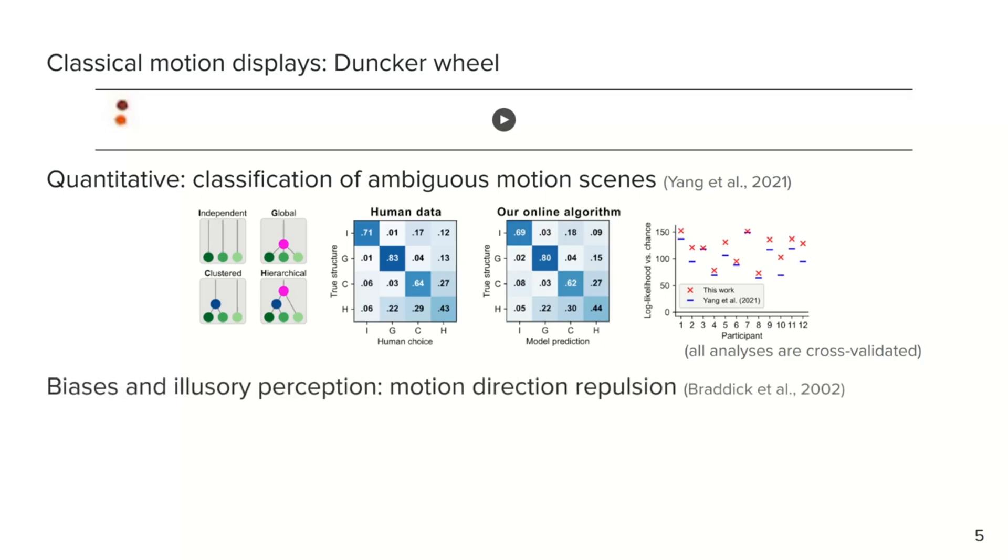The algorithm also explains bias and illusory motion perception, for example, motion direction repulsion, where it mirrors the biphasic bias of humans when reporting the angle between moving groups of dots. And the algorithm explains several more phenomena from the literature.